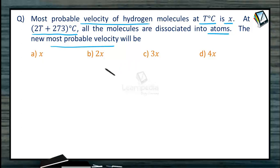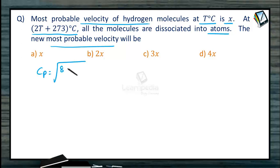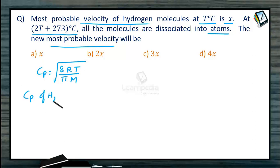To solve this, we need to use the formula for calculating most probable velocity, which is equal to √(8RT/πM). So the most probable velocity of hydrogen molecules is given as x.